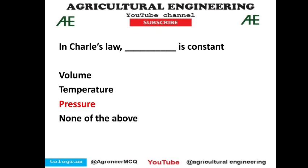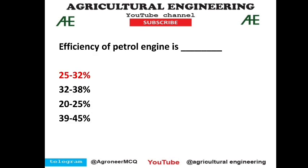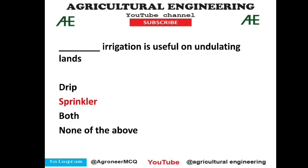The efficiency of a petrol engine is 25 to 32 percent — option 1 is correct. Sprinkler irrigation is useful in undulating lands, as sprinkler and drip irrigation don't show much efficiency in undulating topography — option B is correct. The problem of sprinkler irrigation is disturbance created due to wind, which is a drawback.